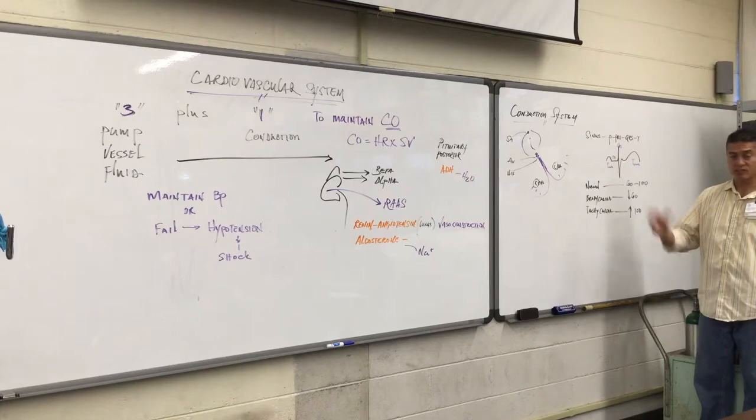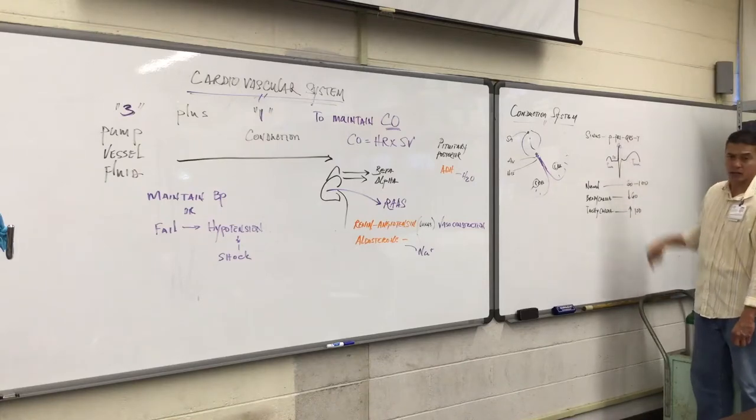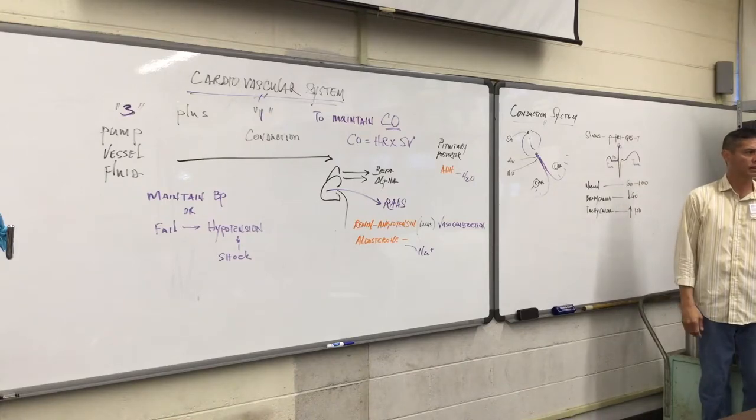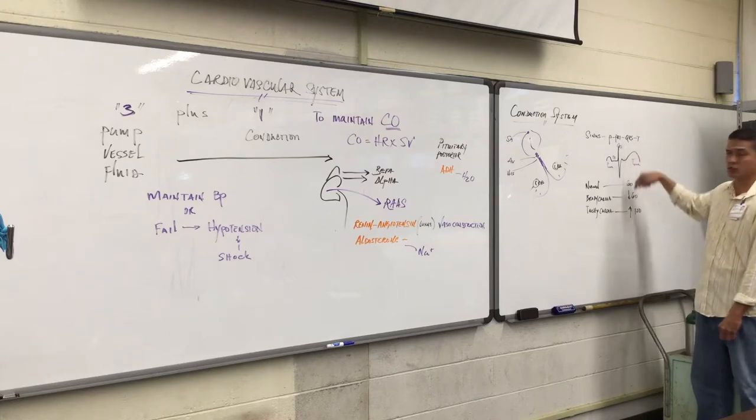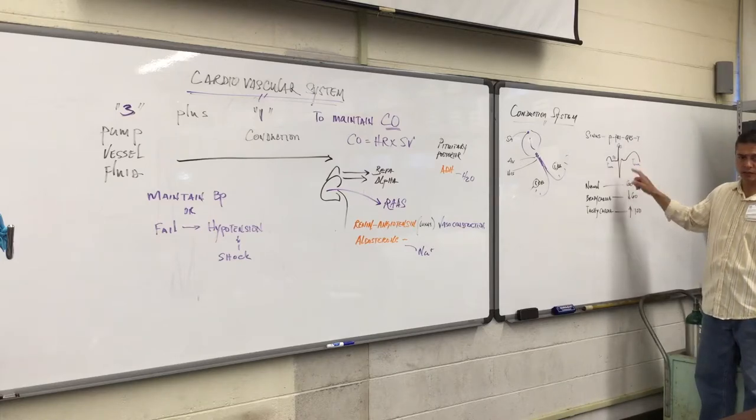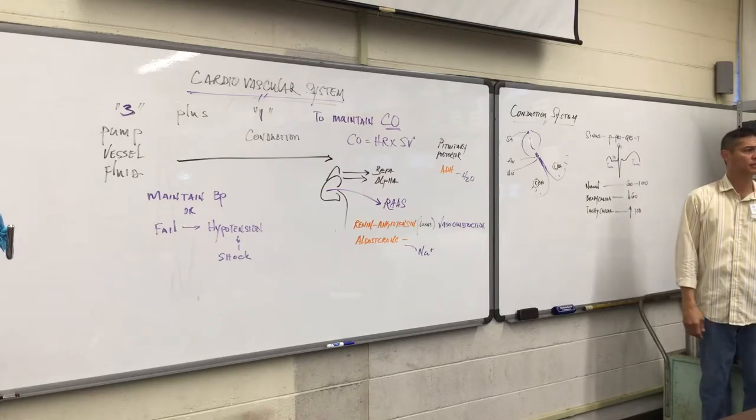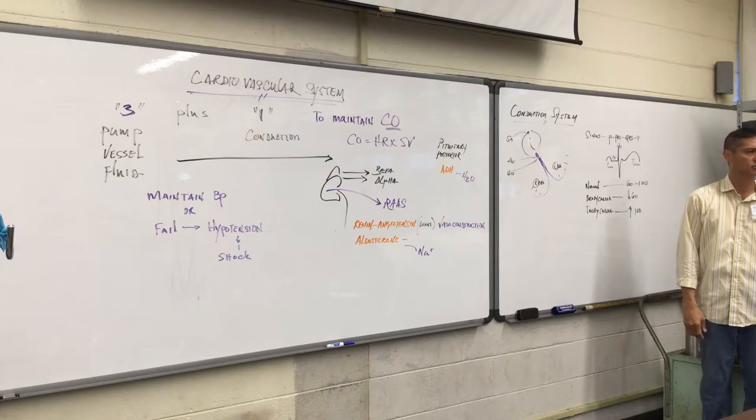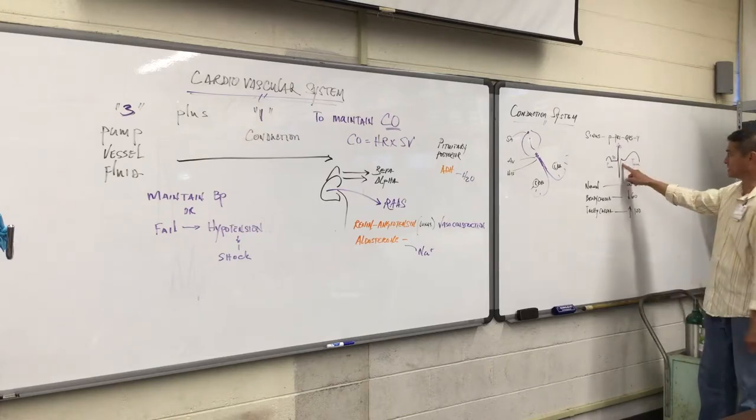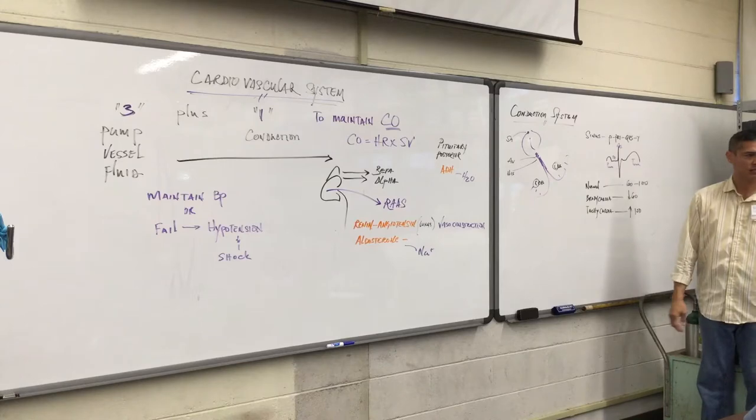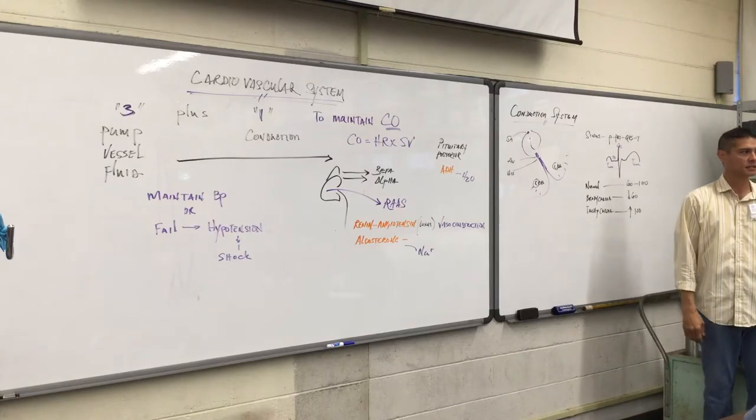Once that impulse now is set free from the AV node, it continues down through the ventricles, the right and left bundle branches, and creates a QRS complex. The QRS complex signifies the depolarization and contraction of the ventricles. Once this is done, then we have a T wave, which represents repolarization of the entire conduction system.